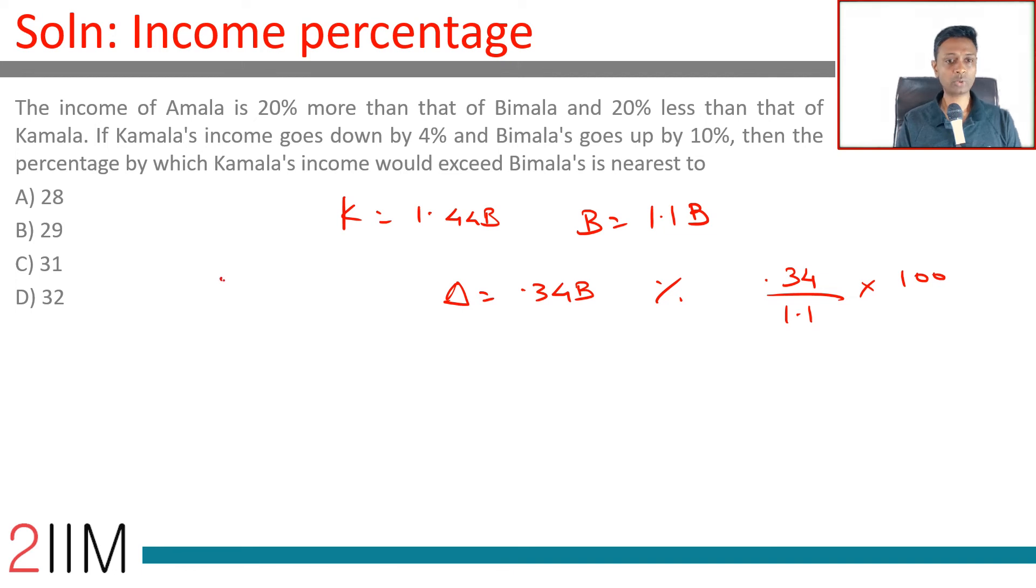And how do we find that? 340 by 11 goes 3 times 33, 10, 0 times 100. 30.999, 30.9 something percent, 31 percent.